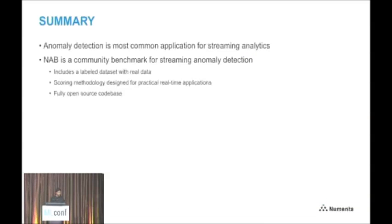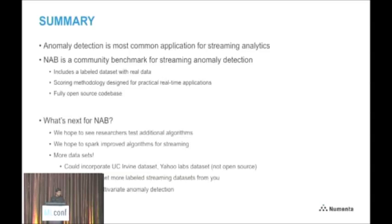In summary, anomaly detection is the most common current application in streaming analytics. NAB is a community benchmark for streaming anomaly detection that includes a comprehensive labeled data set with real data, a scoring methodology designed for practical real-time applications, and a fully open-source code base. We've seeded this with a few algorithms, but we really hope to see researchers test many others and increase focus on streaming analytics from the machine learning community. For version two, we'd love to get more data sets — please contact us if you're willing to donate a data set with labeled anomalies, as that's gold for machine learning practitioners.